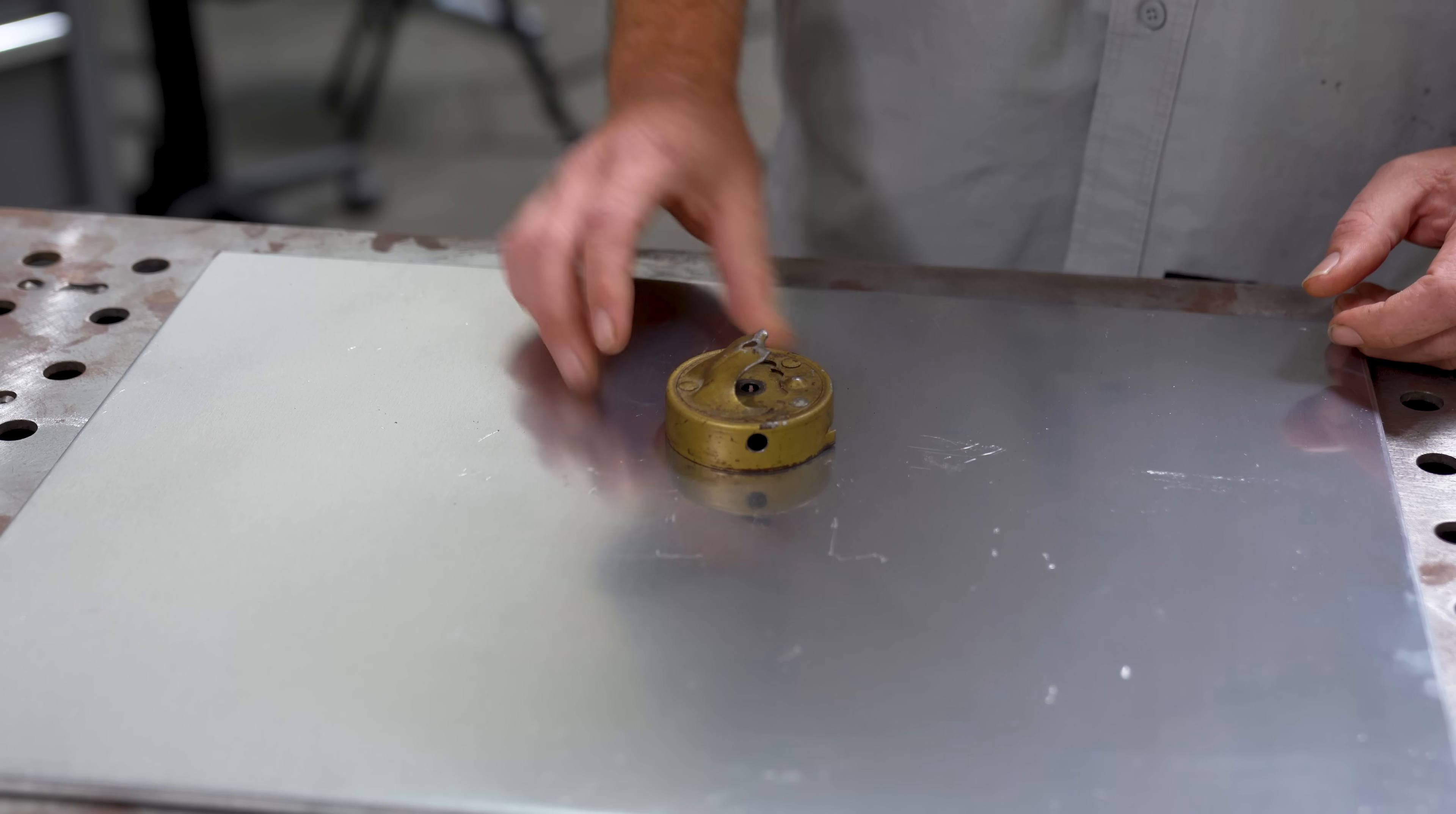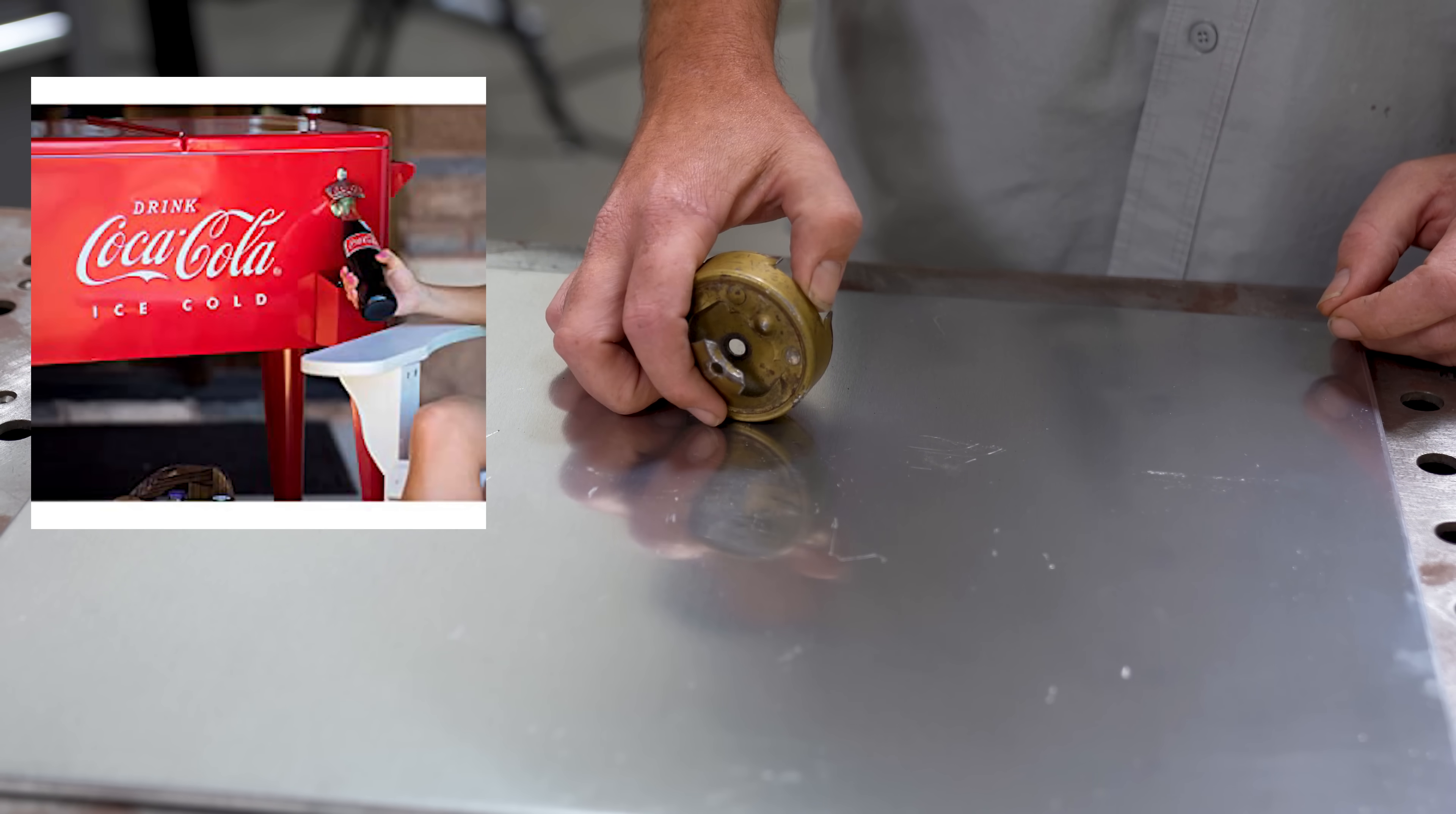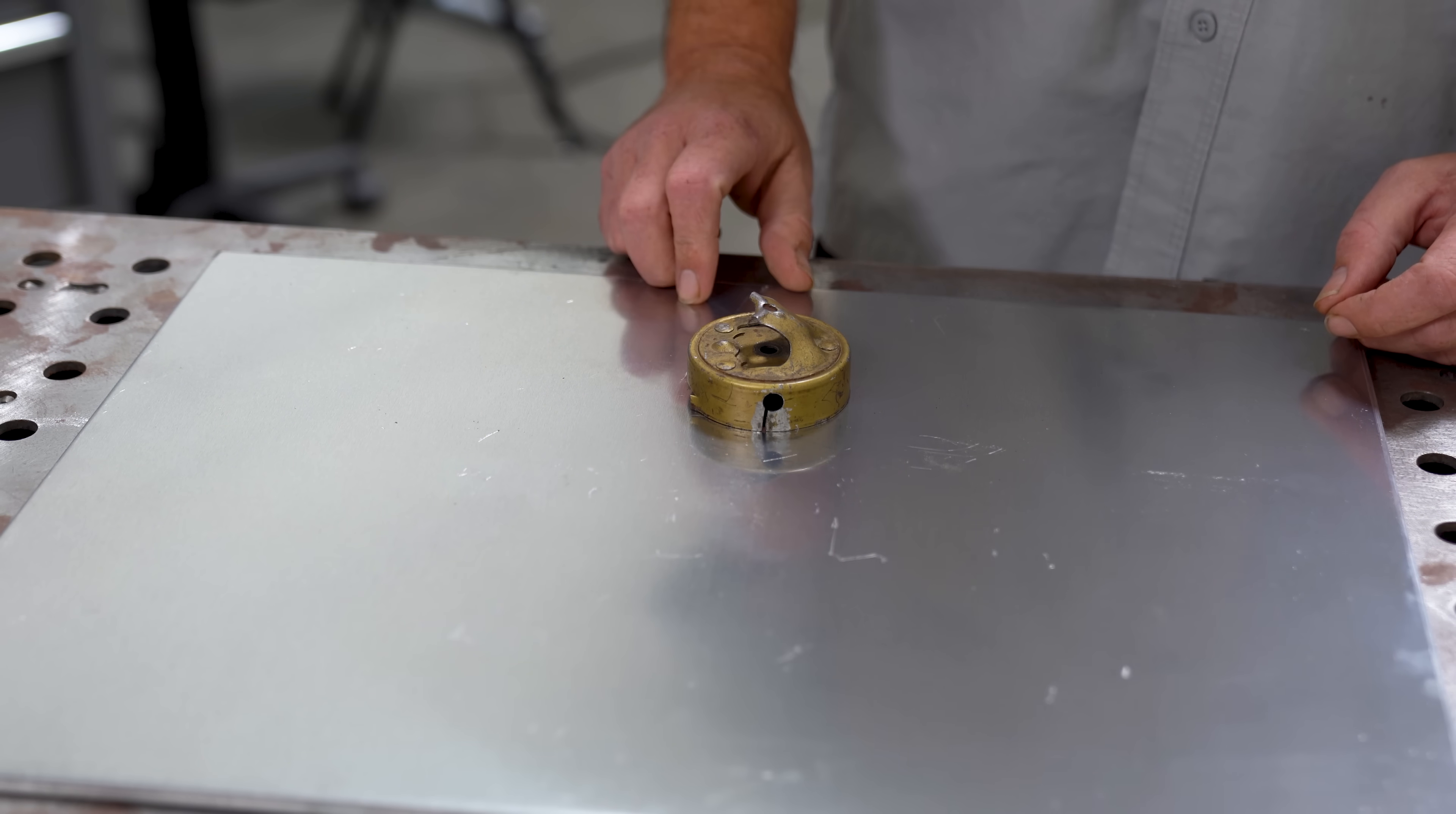Now this part is a vintage bottle opener that was likely attached to an old cooler, or something like this from Coca-Cola, or maybe one similar to it. The simple repair on this job is to weld it up in exchange for pay based on the service provided.